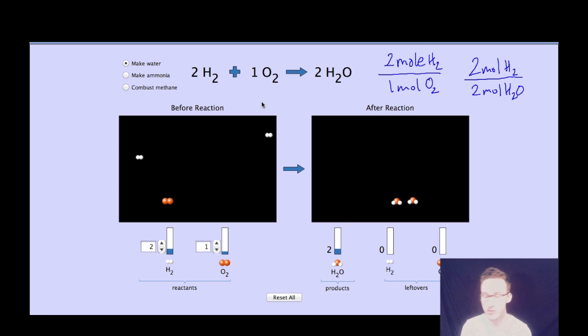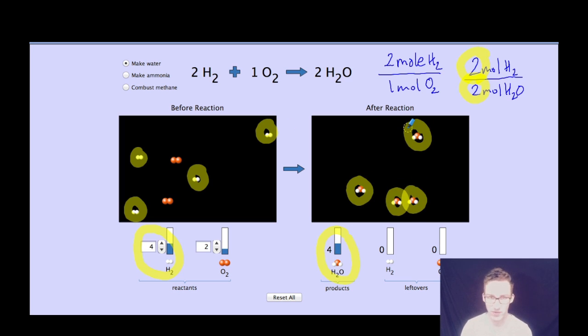But let's say I'm really hungry for some water and I want four moles of water. I'm going to need four moles of hydrogen and two moles of oxygen. Recognize that the relationship between your hydrogen and your water is always going to come back to that two to two or one to one relationship. So if I have four moles of hydrogen, I can make four moles of water, assuming that I have enough oxygen.